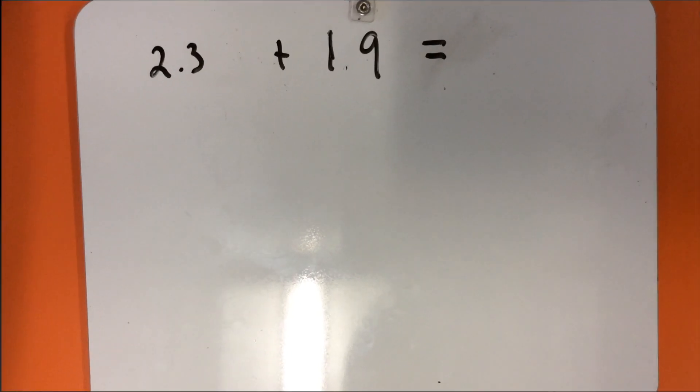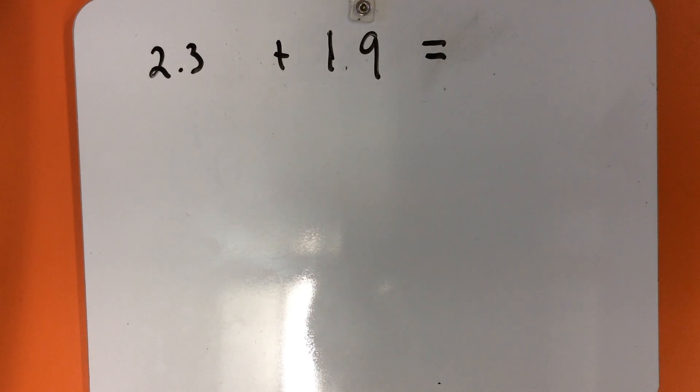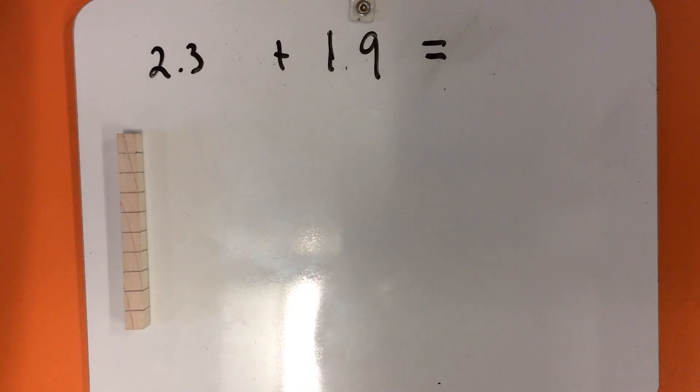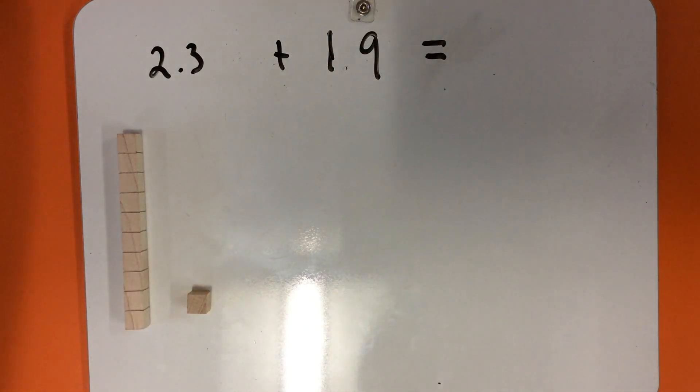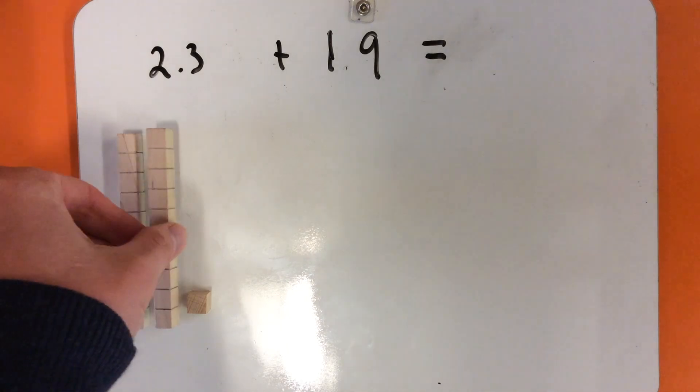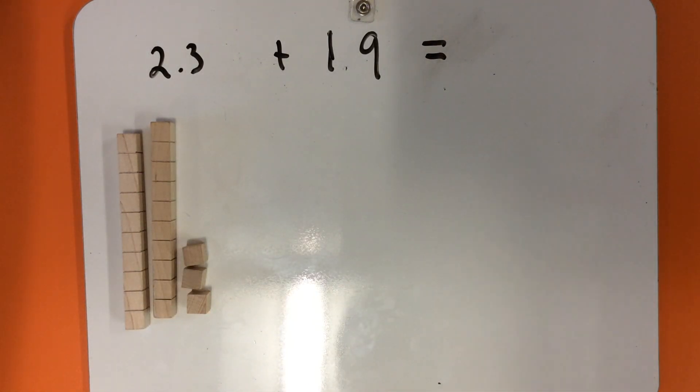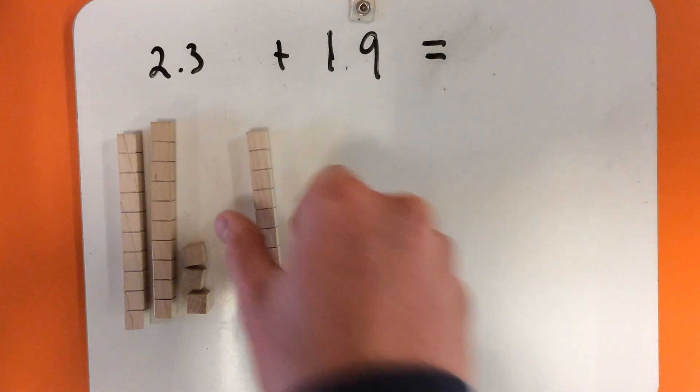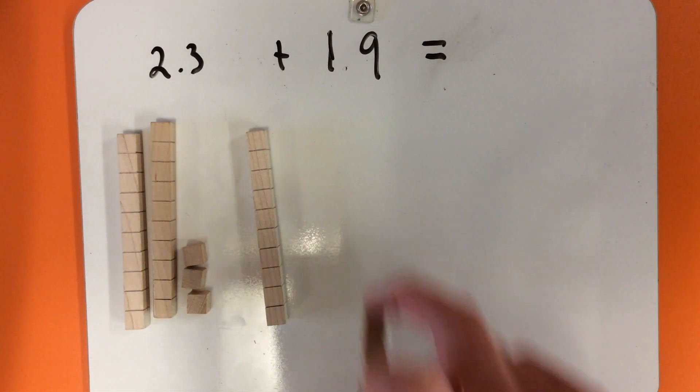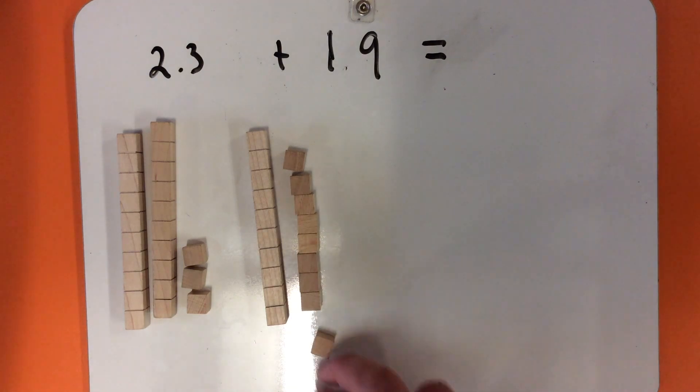Let's take a look at the first problem. For this problem, I'm going to use the place value cubes for 10 to represent 1, and the place value cubes for 1 to represent 1 tenth. So to make 2.3, I have two whole sticks and 3 tenths, and to make 1.9, I have one stick and 9 tenths.